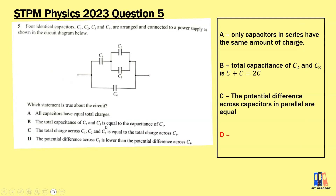Option B — total capacitance of C₂ and C₃ equals the capacitance of C₁: wrong, because C₂ and C₃ are in parallel, so their equivalent capacitance is twice C₁. Option C — total charge across C₁, C₂, C₃ equals total charge across C₄: wrong, only the potential difference across that combination equals the potential difference across C₄. Option D — potential difference across C₁ is lower than across C₄: correct, because C₄ alone spans the same two nodes as the C₁, C₂, C₃ combination, so C₁ should have lower potential difference. Answer is D.